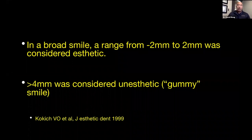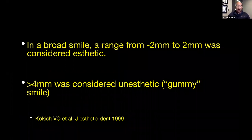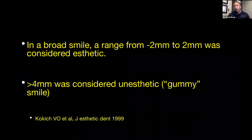When we talk about an aesthetic smile, generally speaking we like seeing between negative two and two millimeters of gingiva. Negative two would be where your lip is actually two millimeters incisal to the gingival zenith. Anything bigger than four millimeters — this comes from Vince Kokich's many papers — greater than four millimeters of tissue shown above the centrals: we call that a gummy smile.